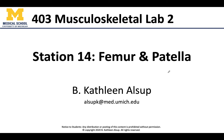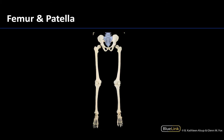Starting with the most proximal associated with the lower limb would be these coxal bones, which are part of the pelvic girdle. We talked about these already in a previous laboratory, but I just wanted to make sure that you remembered that this is going to be an important part of the formation of the hip joint. Since we've already talked about the coxal bones, we're going to focus on the femur and the patella.